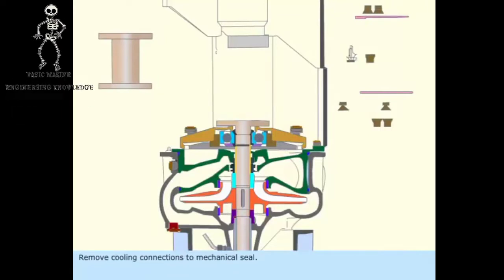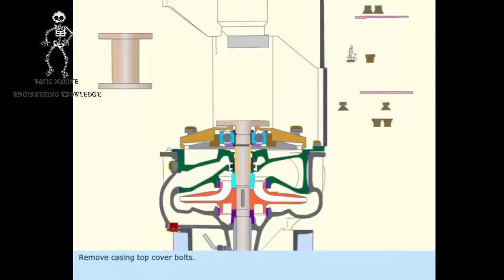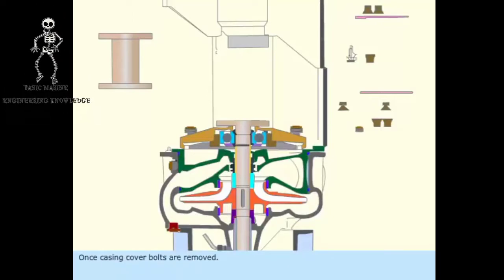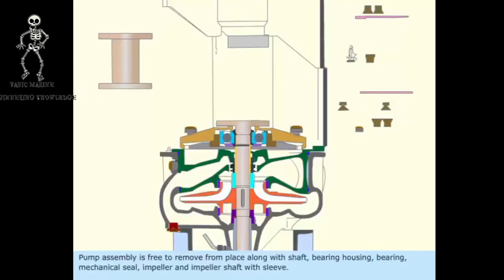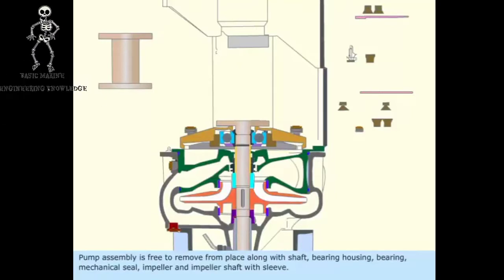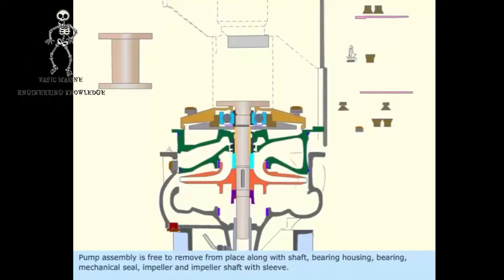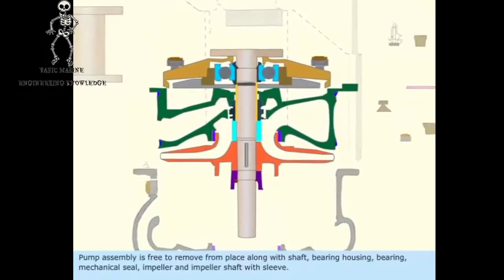Remove cooling connections to mechanical seal. Remove casing top cover bolts. Once casing cover bolts are removed, pump assembly is free to remove from place along with shaft, bearing housing, bearing, mechanical seal, impeller, and impeller shaft with sleeve.